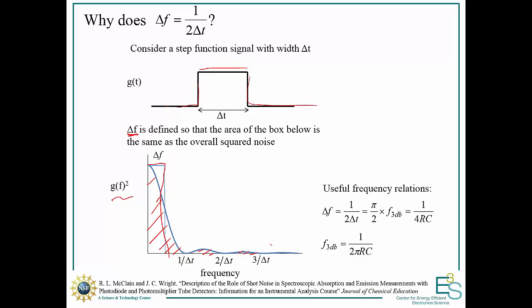If you calculate what frequency that corresponds to, it's 1 over 2 delta t. Here are some additional useful frequency relations that allow you to convert between frequency and time. For instance, the 3 dB frequency is pi over 2 times that. If you model your circuit as an RC circuit, you would get 1 over 4 RC. If you want to look into the actual details of the derivation, you can find that here.